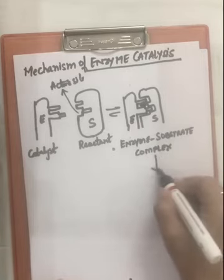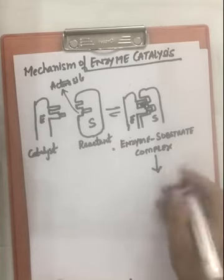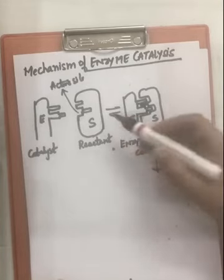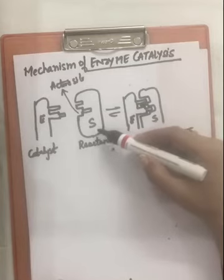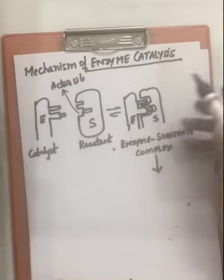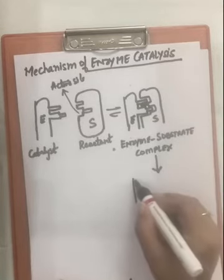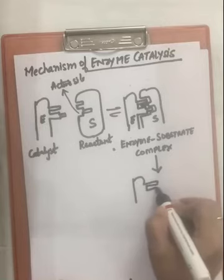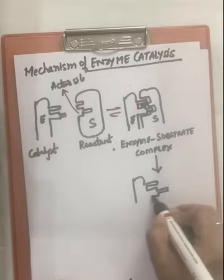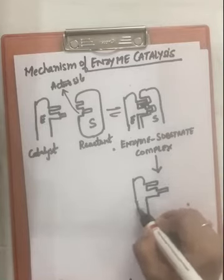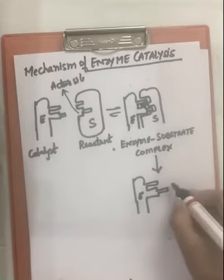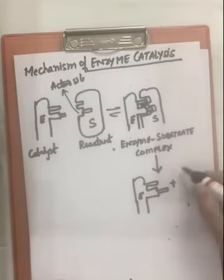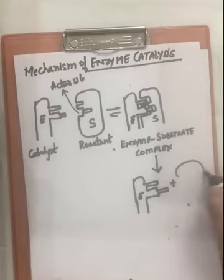This enzyme-substrate complex is highly activated and unstable, so it decomposes. When the complex forms, the substrate — the reactant — changes to the products. The enzyme is recovered as it is after the reaction, while the substrate changes to products. So the enzyme catalyzes this biochemical reaction in two steps: first, binding of enzyme to substrate to form the enzyme-substrate complex; second, decomposition of the complex to give products.